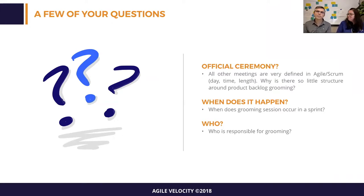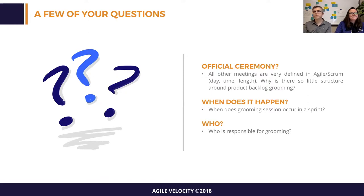Who's responsible for grooming? The product owner is responsible for making sure there is a groomed backlog. But refinement is a participatory event — the whole team, product owner, scrum master, and everyone required to do the work has to do it together collaboratively. It's the product owner's responsibility to make sure it happens, but it's the whole team's responsibility to join in and collaborate on it.